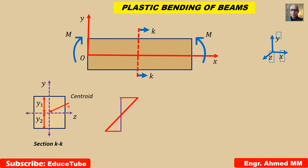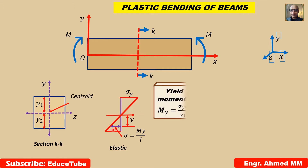In the elastic neutral axis, the stress distribution produces a stress sigma equal to My/I, where sigma is at a distance of y from the neutral axis.